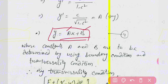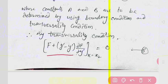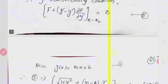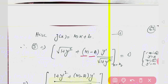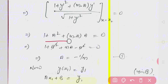To find a and b: we know y(x1) = y1 gives one condition. For the other condition, we apply the transversality condition: f + (g' - y') * (∂f/∂y') at x2 = 0. Here g(x) = mx + b, so g' = m. And ∂f/∂y' = y' / sqrt(1 + y'^2). Substituting and simplifying gives a = -1/m.